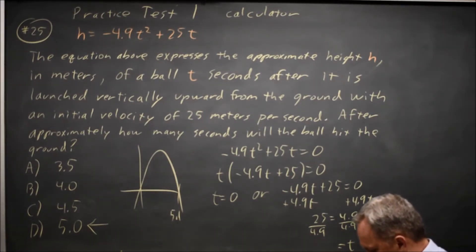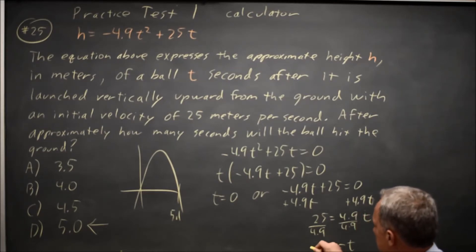So I have 25 over 4.9 on my calculator is 5.1, same as I found by graphing.